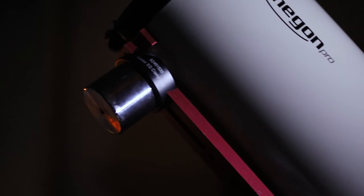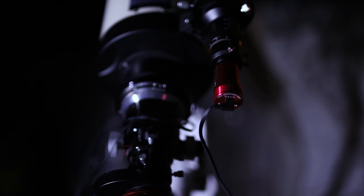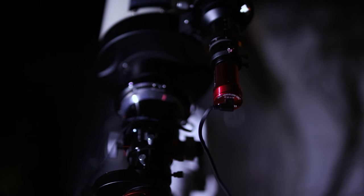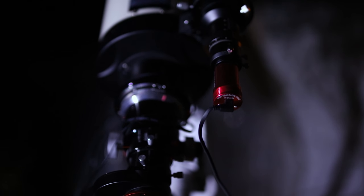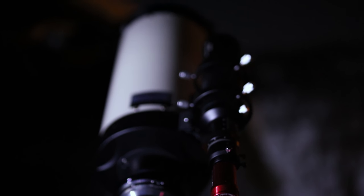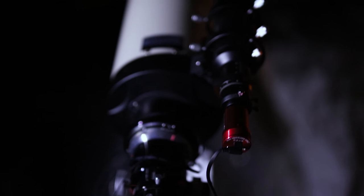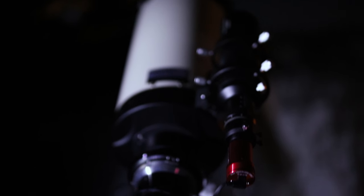The one thing that is still annoying me, and I need to figure out a way how to solve it, look at the guidescope. It's hanging on the side of the main scope. I oriented it east, which is better than west, but balancing this is now almost impossible. I need to find a better way to position this guidescope.